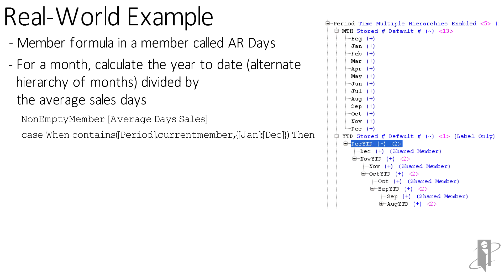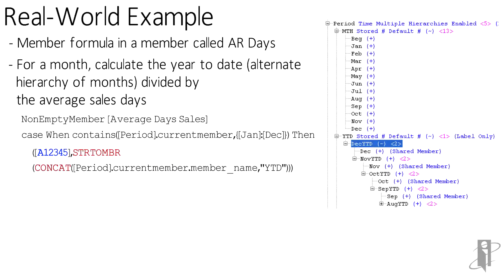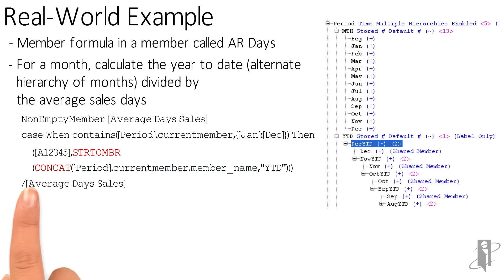So if my criteria is met, we're going to take the account member A12345 and turn the result of the next piece into a member name — and that's what string-to-member does. We're going to concatenate the period dot current member dot member name. Using dot member name brings back the actual member name and not a value. So I'm going to get the member name and concatenate the string YTD to it, then divide that by average days sales, and then end my statement.